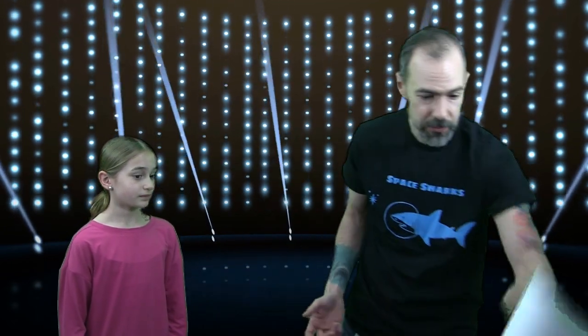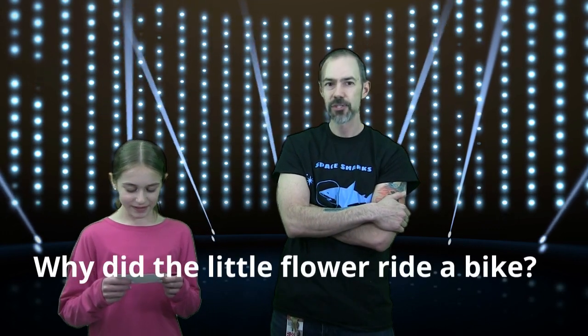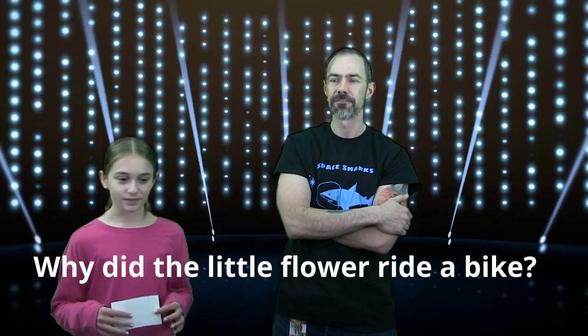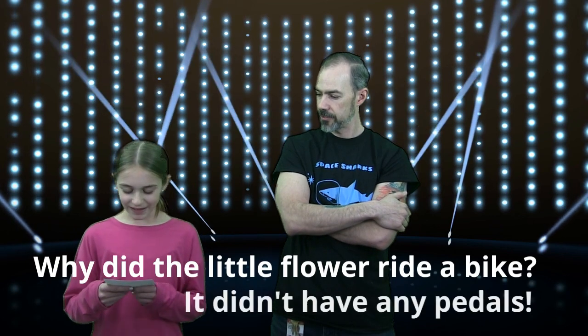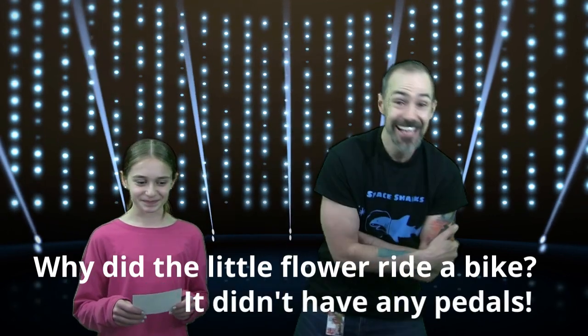All right, Kate, so you have a, I don't have a joke. Did I give you, I didn't even give you a joke. Yo, Kate, here's a joke. Here's a joke for you. Why did the little flower ride a bike? That's a great joke. Why did the little flower ride a bike? It didn't have any pedals. It didn't have any pedals. It didn't have any pedals. That's a good one. Great job, Kate. Great job.